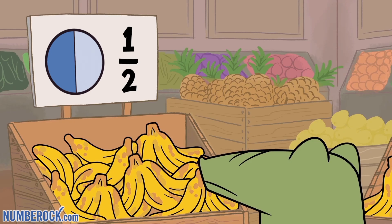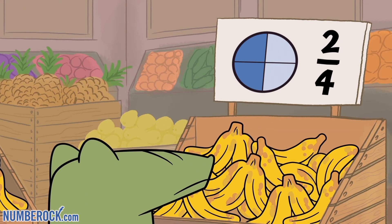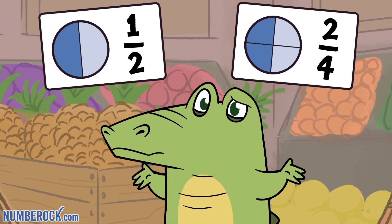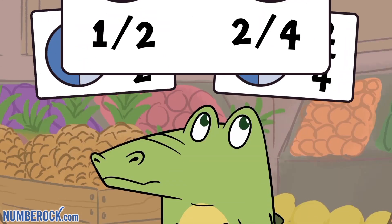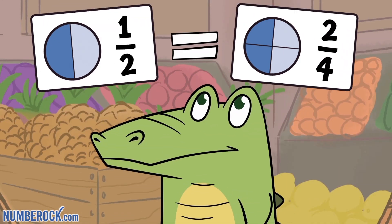Now the values are the same on each side — the gator wants to eat but he can't decide. 1/2 on the left and 2/4 on the right. The fractions are equivalent, so he takes a huge bite.